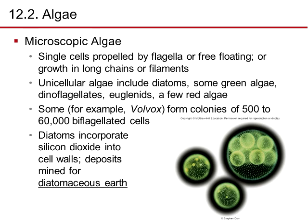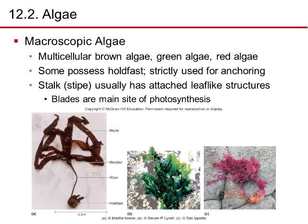Microscopic algae are single-celled, propelled by flagella, free-floating, or grow in long-chained filaments. Unicellular forms include diatoms, some green algae, dinoflagellates, euglenoids, and a few red algae. For example, Volvox forms colonies of 500 to 60,000 biflagellated cells. Diatoms incorporate silicon dioxide into their cell walls and deposit their remains to form diatomaceous earth, which we use in industry.